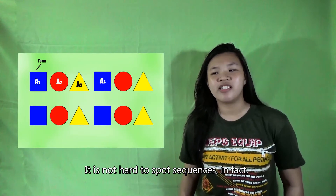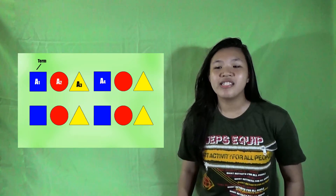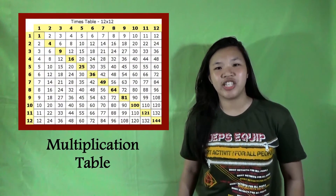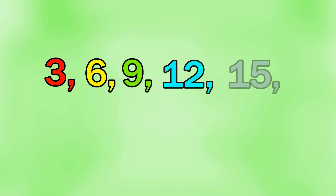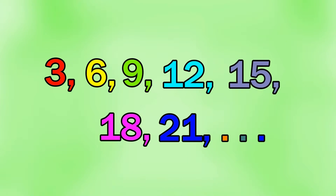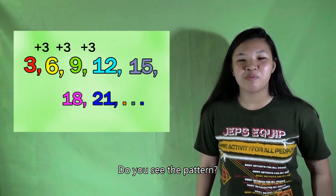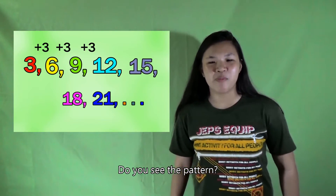It is not hard to spot a sequence. In fact, we can see some of the simplest sequences in the multiplication table, such as 3, 6, 9, 12, 15, 18, and 21. Do you see the pattern? We just add 3 to the previous number to get the next number.